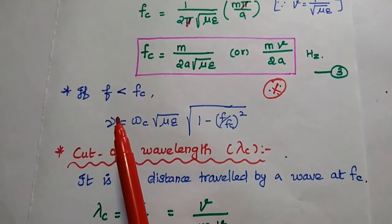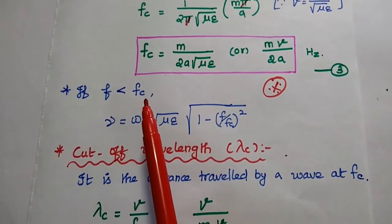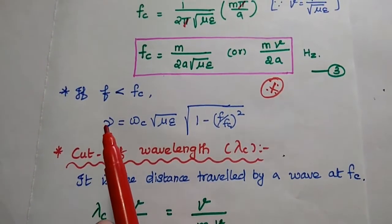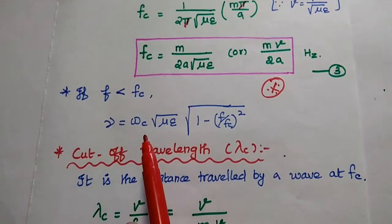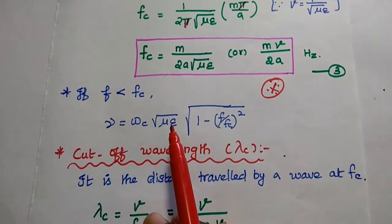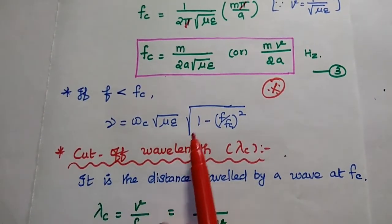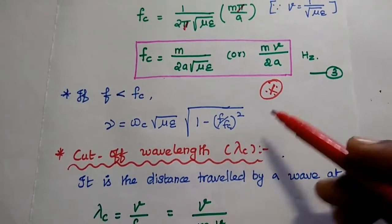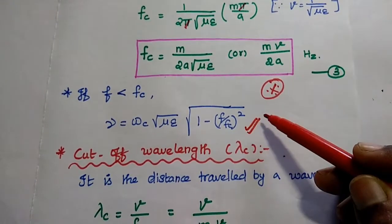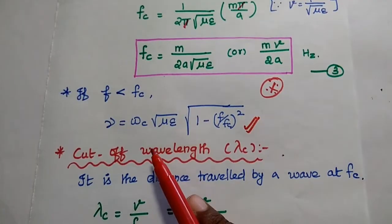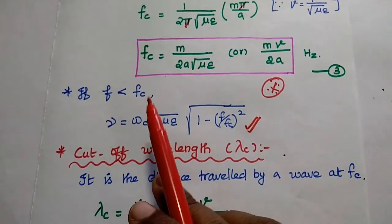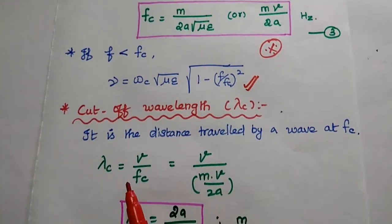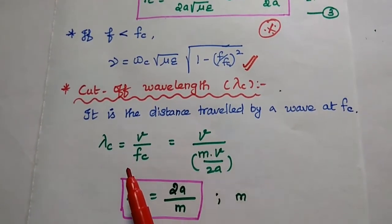If the operating frequency is less than the cutoff frequency, then we can find out the propagation constant from the formula γ = ωc√(με) × √(1 − (f/fc)²). This is another formula to find the propagation constant when frequency is less than cutoff frequency. Next, we are going to find out the cutoff wavelength.